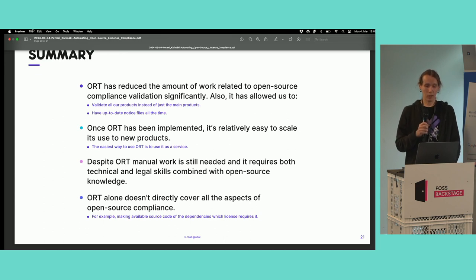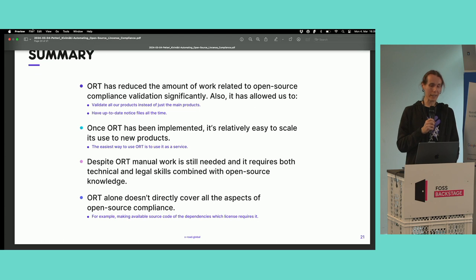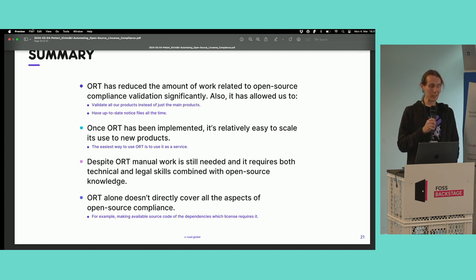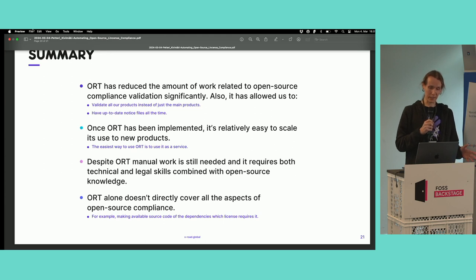Finally, as was mentioned in the previous presentation as well, there are also other kinds of obligations coming from open source licenses that you must be compliant with and that you cannot automate — for example, making available source code of the dependencies when the license requires it. That's something you still need to do separately. You can build additional tooling to automate it, or do it manually, or find some kind of solution that enables you to meet the requirements of the license while trying to minimize the manual work.